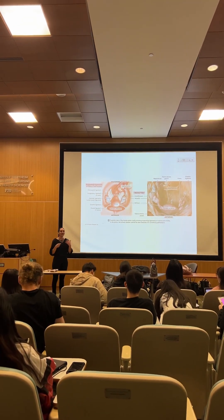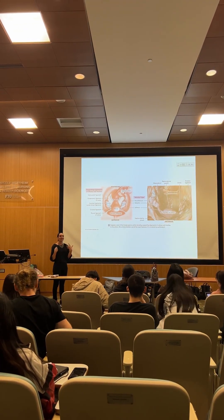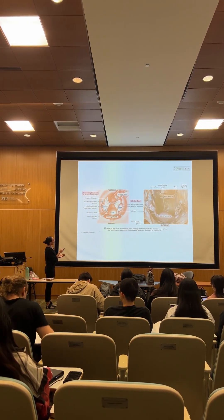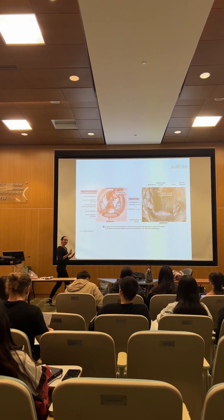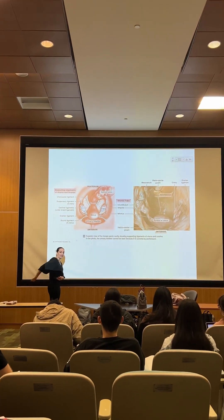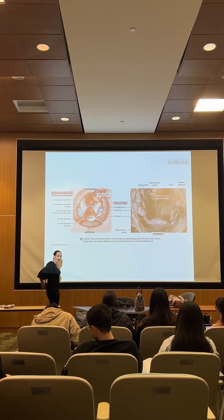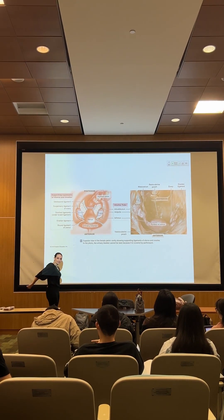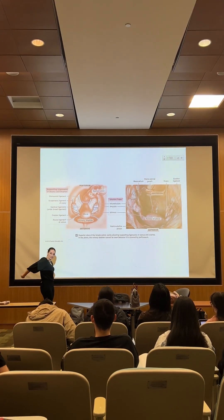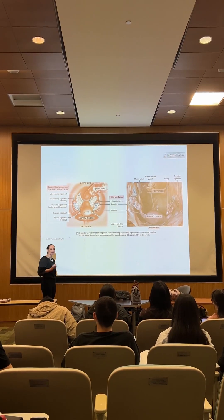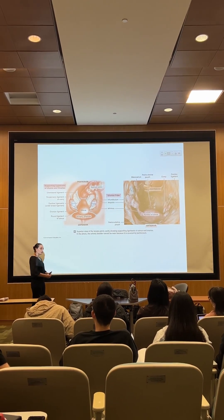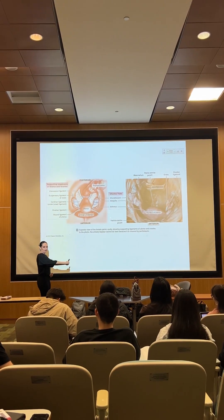These ligaments support the uterus and the ovaries. You have the utero-sacral ligament, which is a ligament that goes from the uterus to the sacrum, which is posterior. So it's like you have a cord holding you posteriorly, which means that if you have this cord holding the uterus to the posterior aspect, the uterus cannot move posteriorly. Now you have another ligament that goes from the uterus to the anterior abdominal wall.